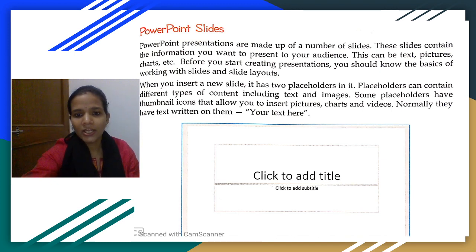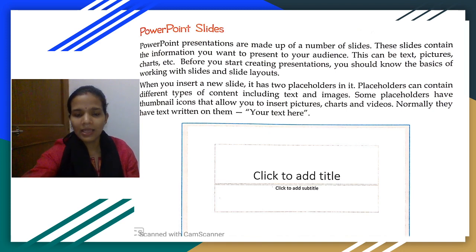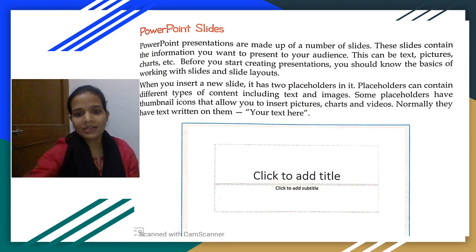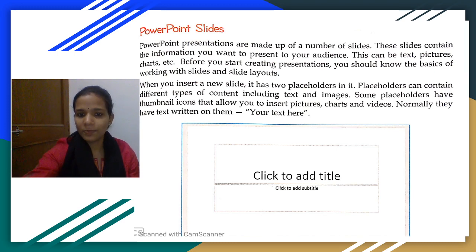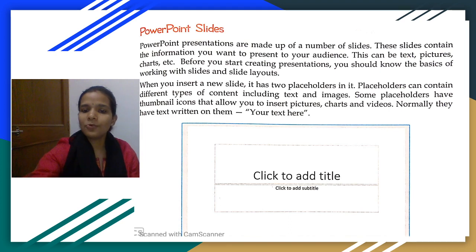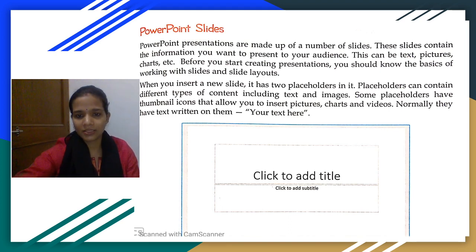Click the first placeholder box to add your title text. For example, if your topic is 'Evaporation,' you write 'Evaporation' as the title. Then in the subtitle placeholder you can write the definition or details of the topic. So the first placeholder is for the title and the second is for the subtitle or supporting information.